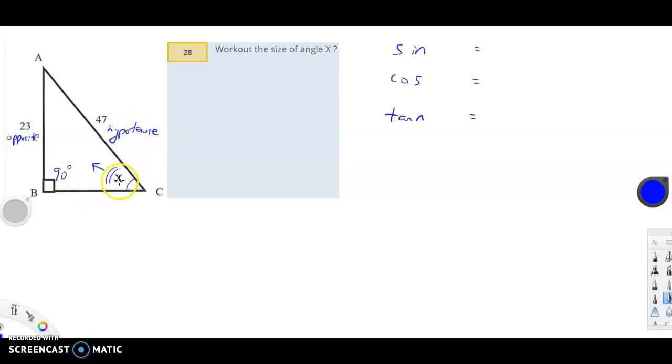And this other side here, beside us from where we're looking out, that's called the adjacent: A, D, J, A, C, E, N, T.